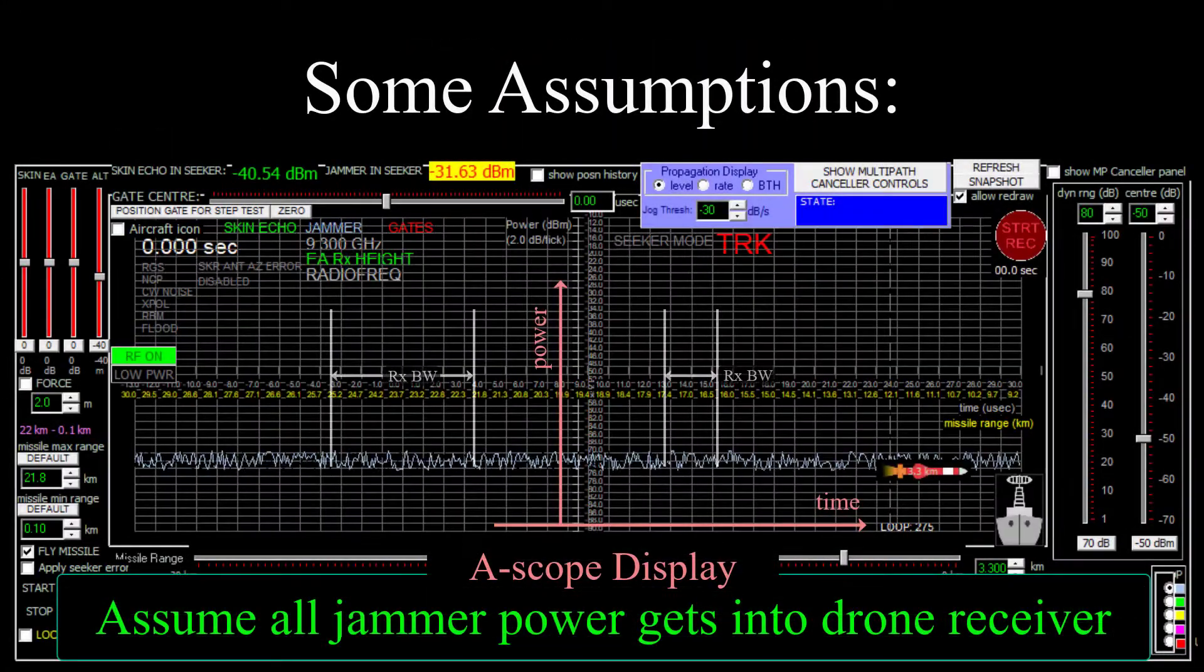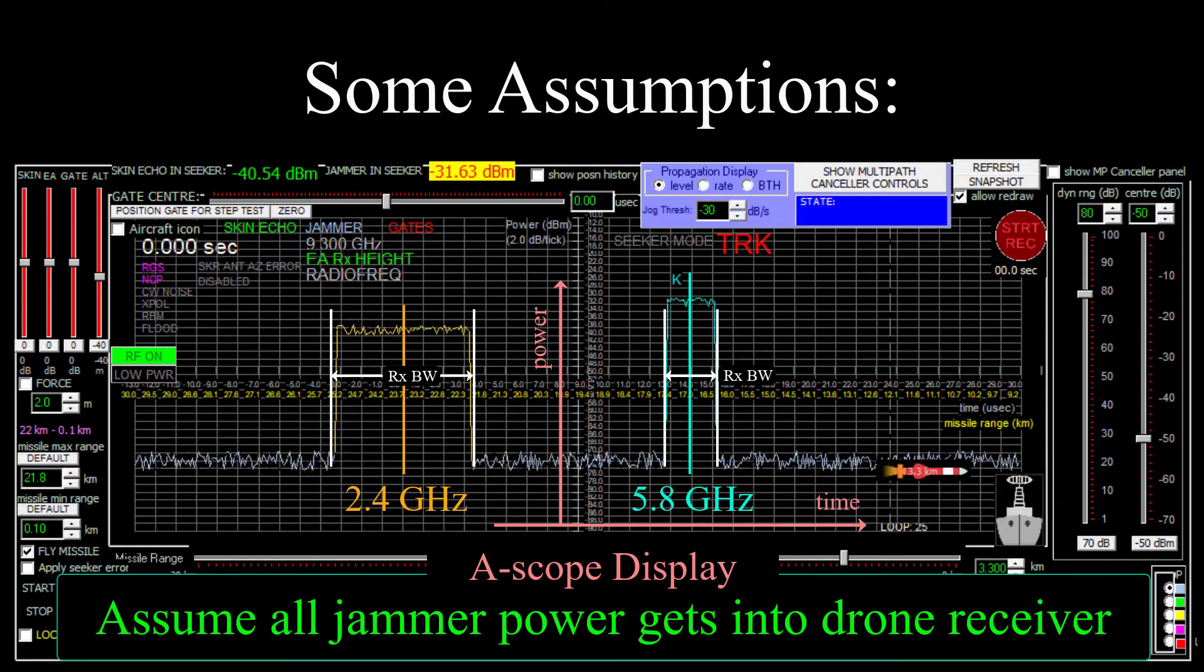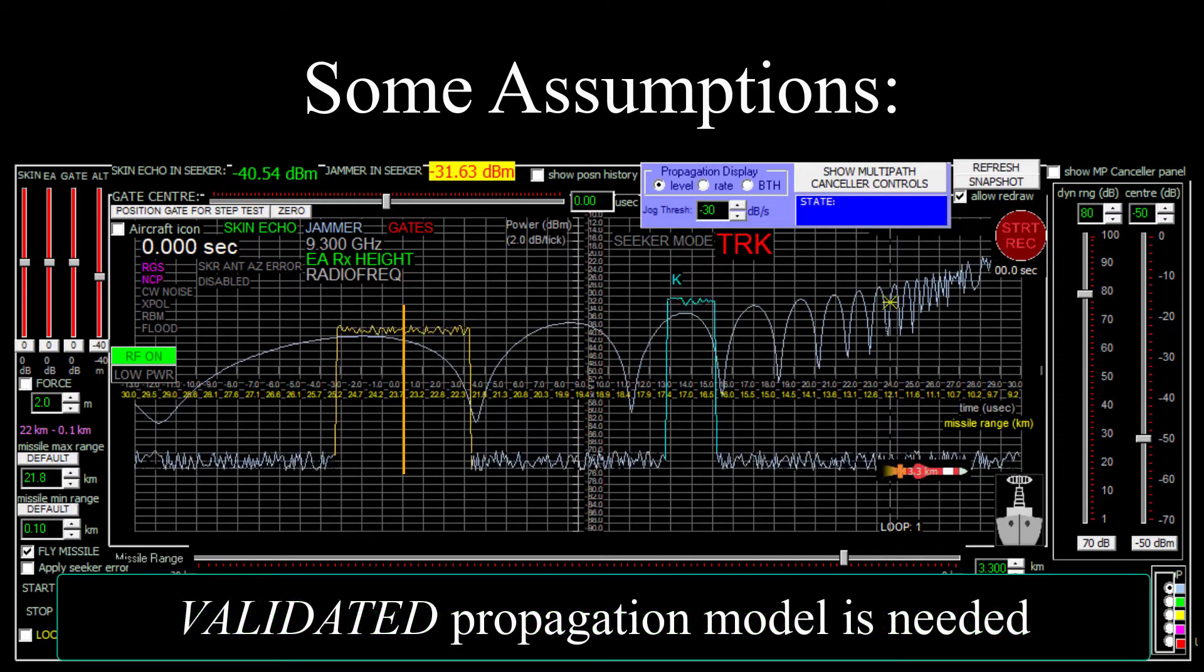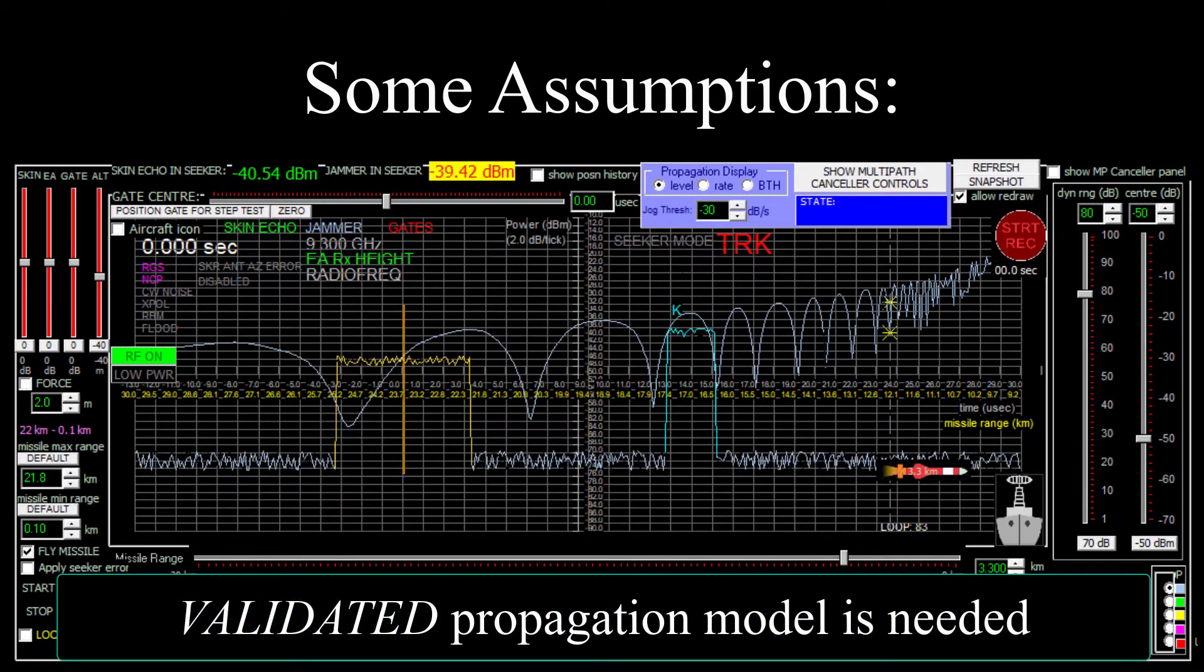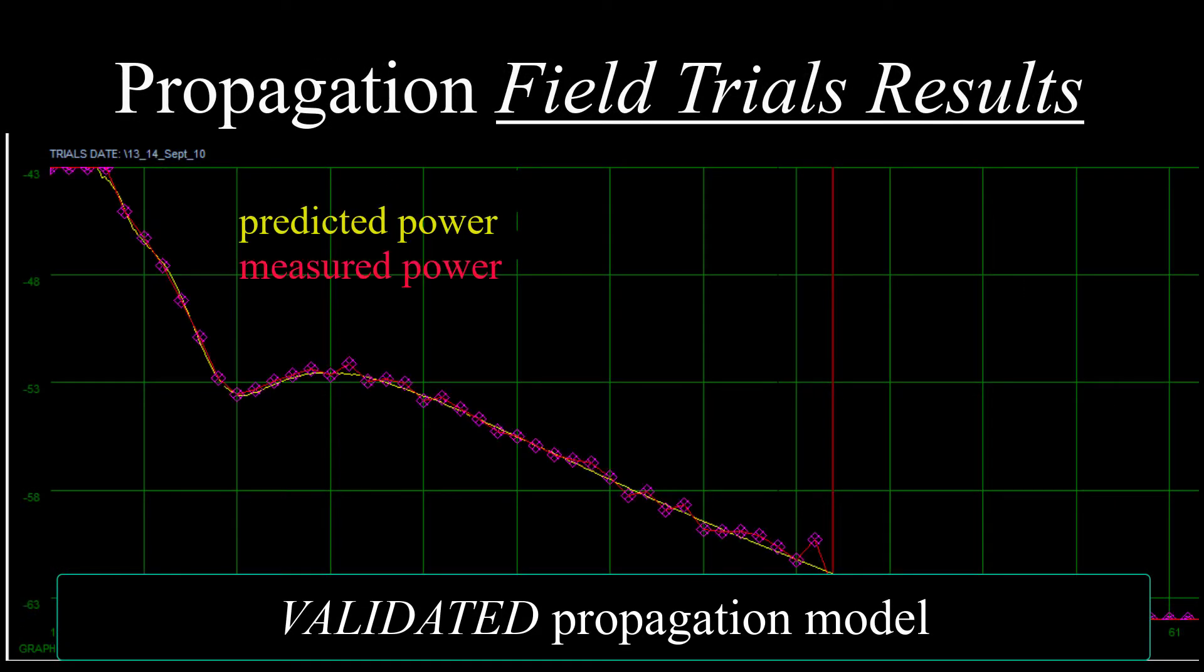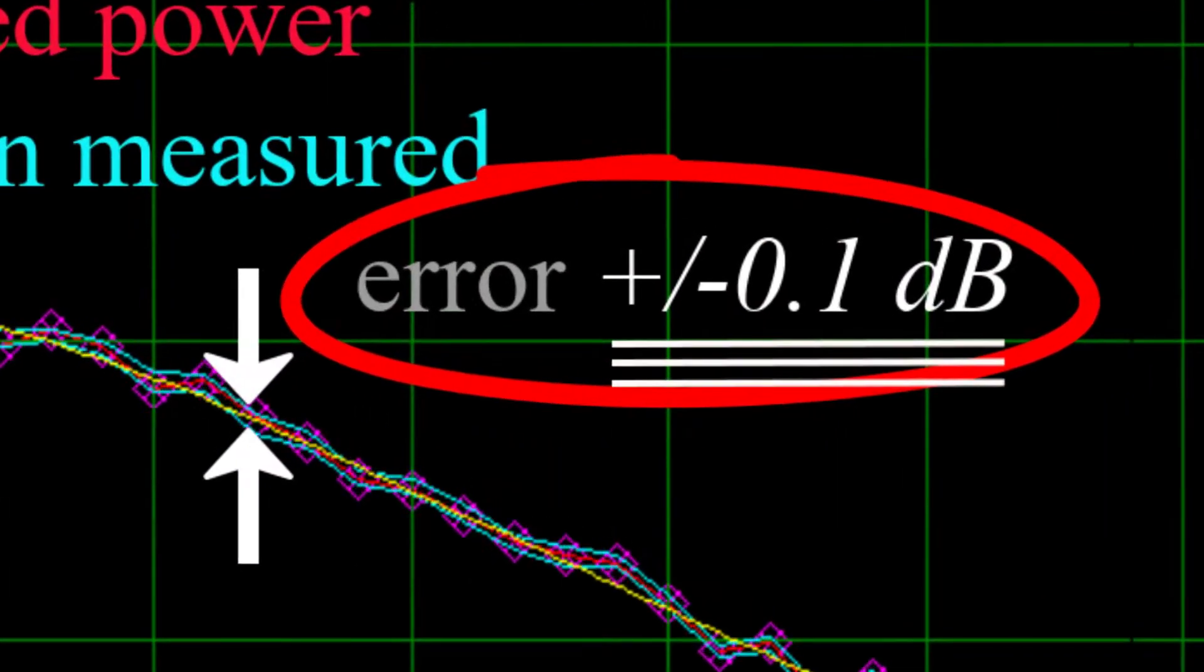So that's the list. Let's assume that all the jammer power goes into the drone's receiver, so we don't need to worry about the spectrum release for now. And the software needs a propagation model that has been validated against experimental measurements, one that actually represents propagation over the sea surface. And that's possible.